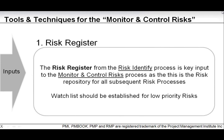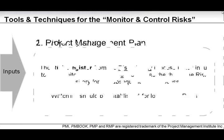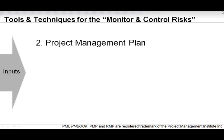The risk register, as we know, was the main output from the risk identification process and is the key input to the monitor and control risk process, as it is the risk repository for all subsequent risk processes. In addition to the risk register, we also had a watch list from the plan risk response for low-priority risks. So it is the risk register plus watch list — though in PMI they state only the risk register as the input. You may want to take note of this for exam preparation.